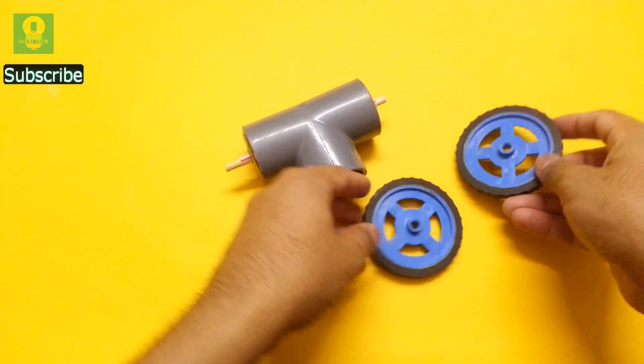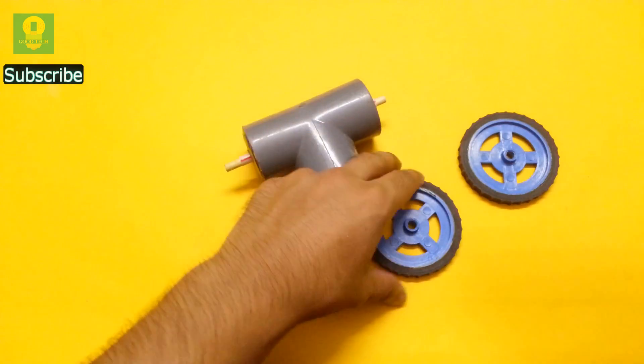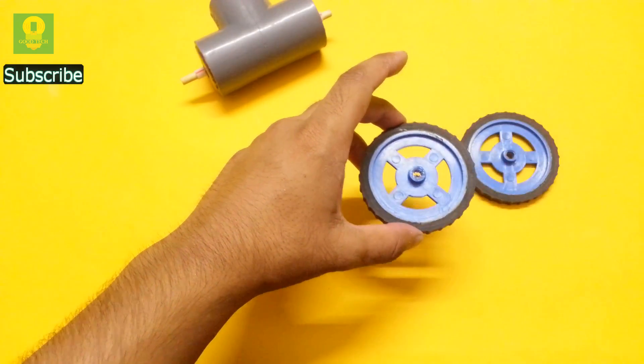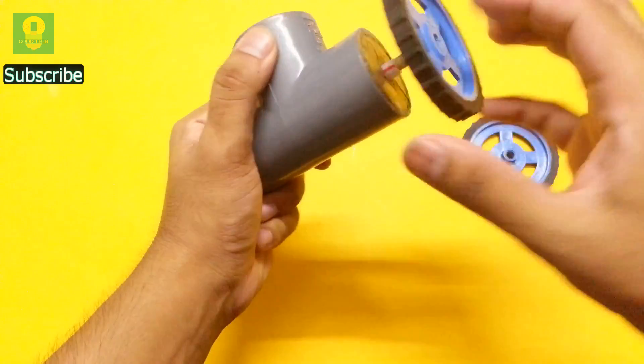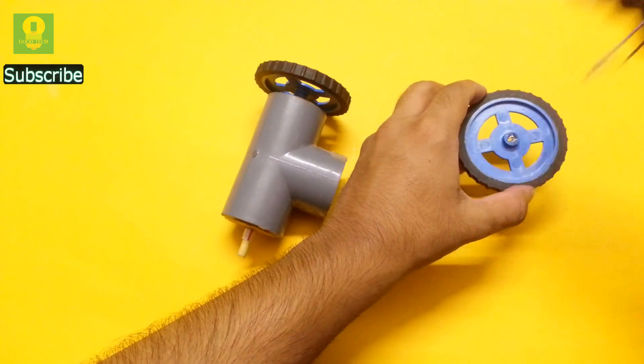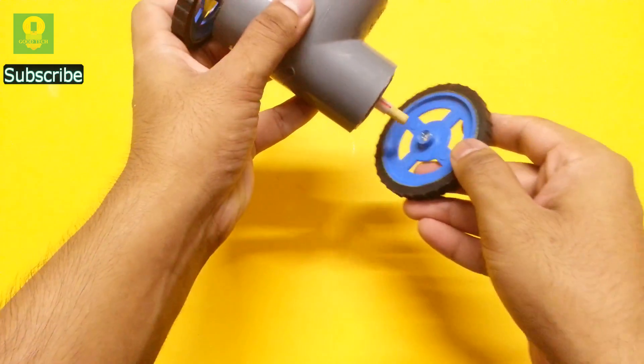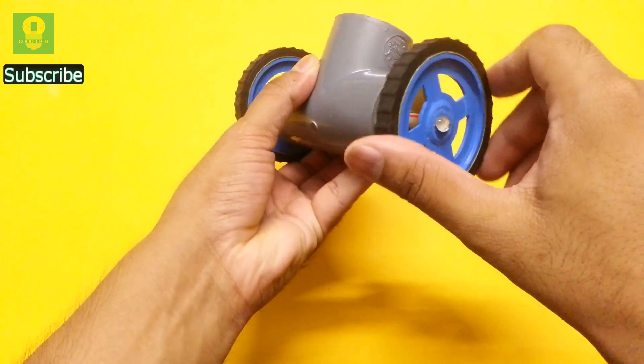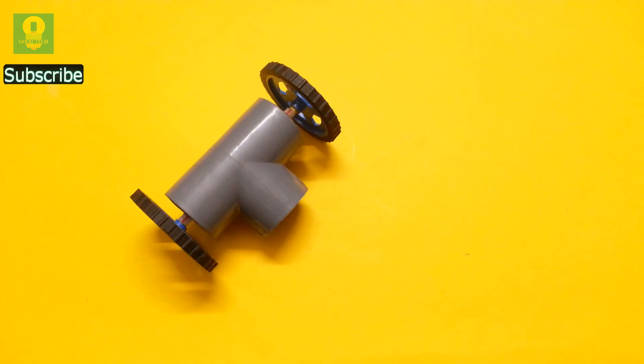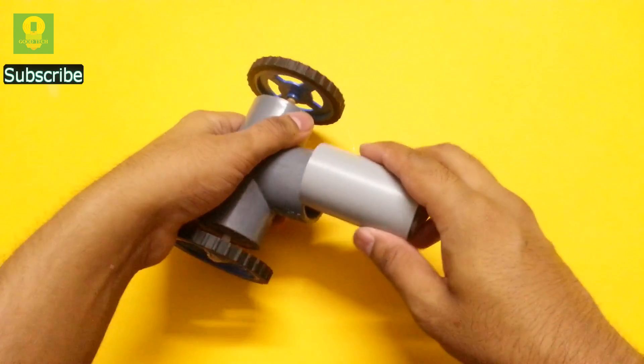Take two wheels. Using hot glue, attach both the wheels to the wooden stick. Fix a small piece of PVC pipe to the PVC tee.